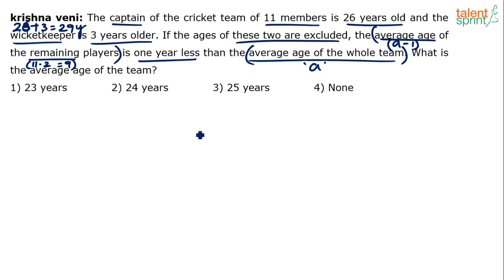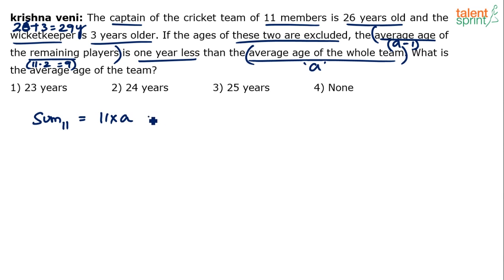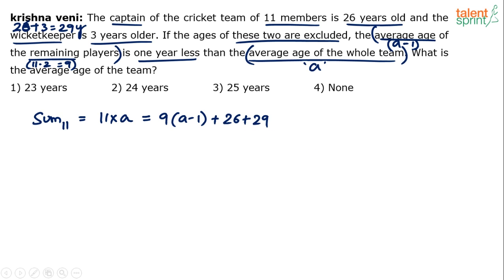Now, try to balance the total of their ages. The sum of all 11 members will be equal to 11 times A, because average is A. This should be equal to 9 times (A minus 1) plus 26 plus 29. Solve for A and you will get the required answer.